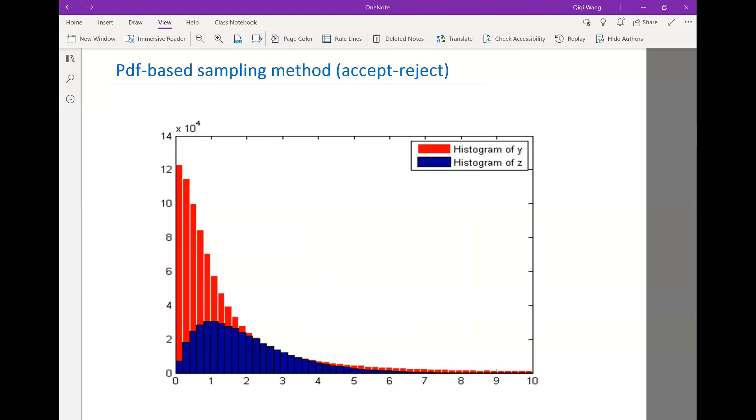So we cannot naively use the PDF-based sampling method starting from a uniform distribution because we will never have a uniform distribution whose interval goes to infinity.